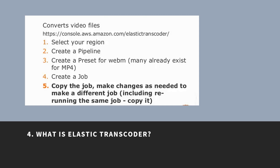Amazon Elastic Transcoder is media transcoding in the cloud. It is designed to be highly scalable, easy to use, and a cost-effective way for developers. When you create a job, Elastic Transcoder sends metrics and dimensions to CloudWatch every minute. Amazon Elastic Transcoder lets you convert media files stored in Amazon S3 into media files in the formats required for consumer playback.